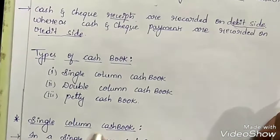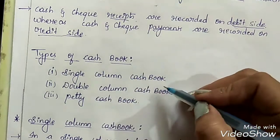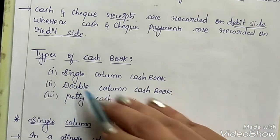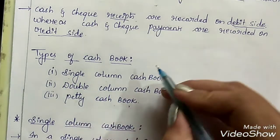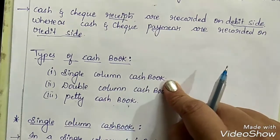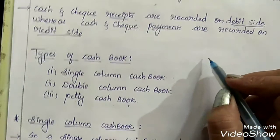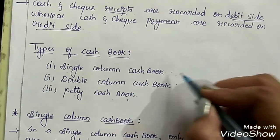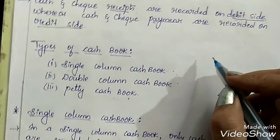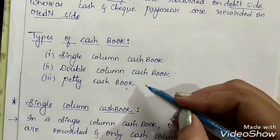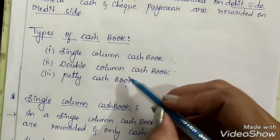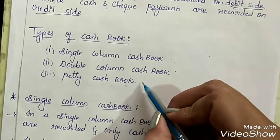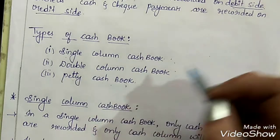Now let's understand the types of cash book. There are basically 3 types: single column cash book, double column cash book, and petty cash book. In single column cash book, only one amount column is present. In double column cash book, two amount columns are present — one for cash and one for bank. Petty cash book records all the small expenses made in day-to-day business activities.